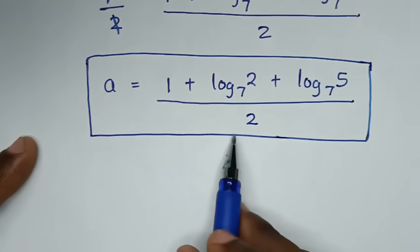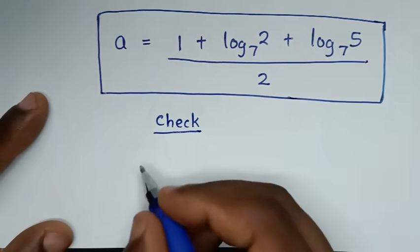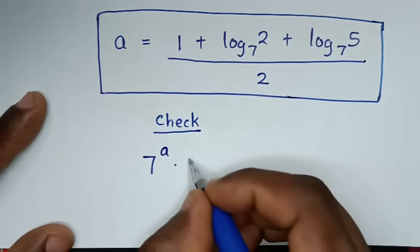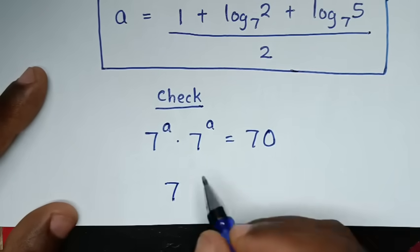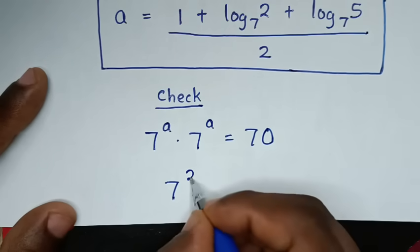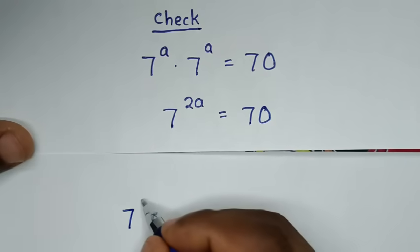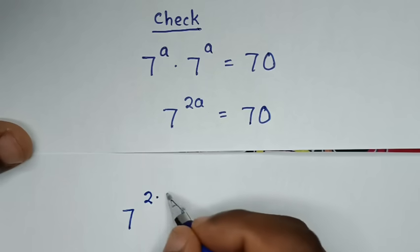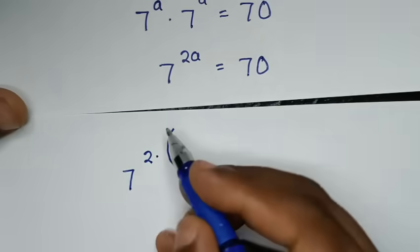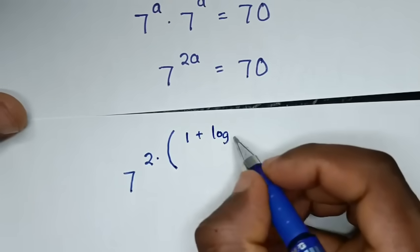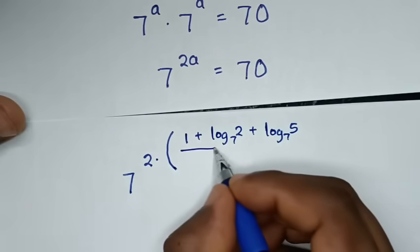Now in the next step, let's check this answer to see if it is correct. The original problem is 7^A times 7^A equals 70. Taking this power plus this power gives 7^(A+A) = 7^(2A) = 70. Then substituting our answer: 2 times A gives 7 power of 1 plus log base 7 of 2 plus log base 7 of 5, over 2.